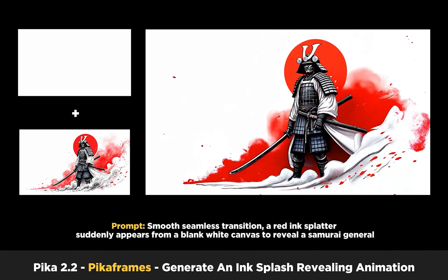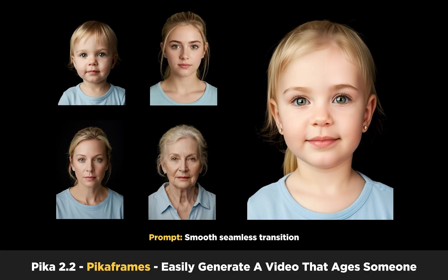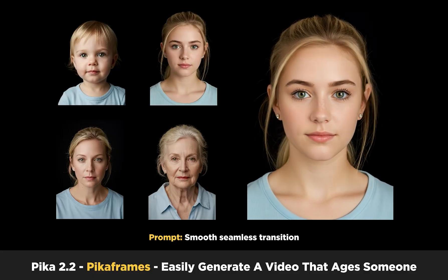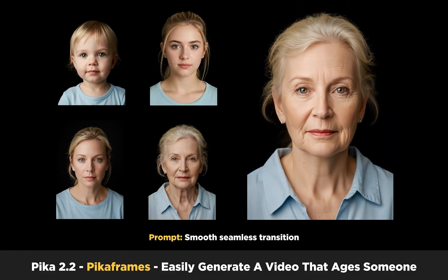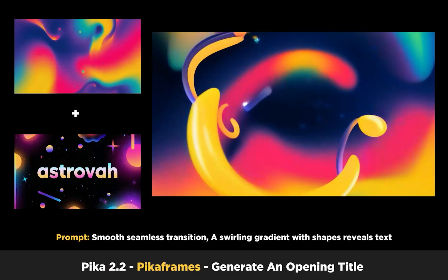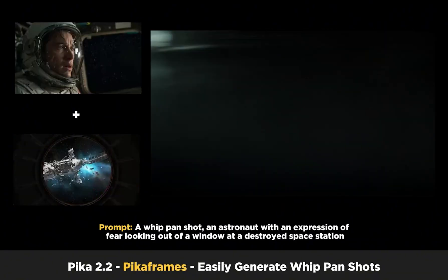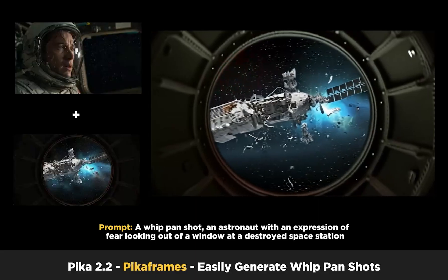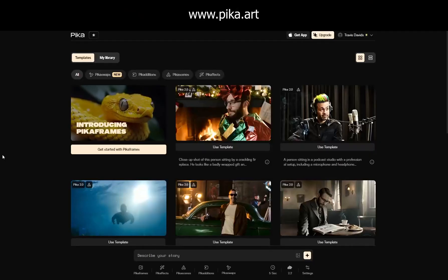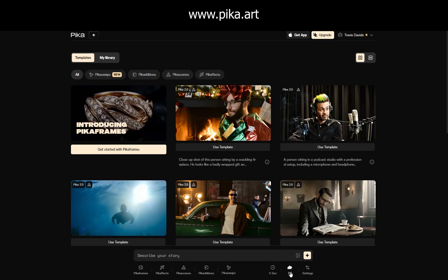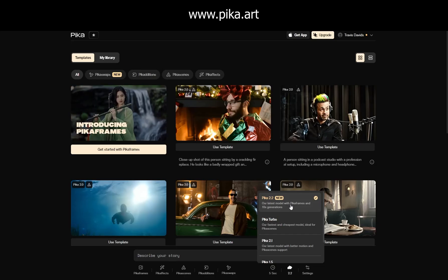Pika has just released their brand new 2.2 video model, which has much better quality and consistency. You can also generate 10-second videos now, and they've released a brand new feature on the platform called Pika Frames. This is essentially keyframing — keyframing is nothing new, but the way that Pika Frames handles transitioning from one image to another looks really amazing.